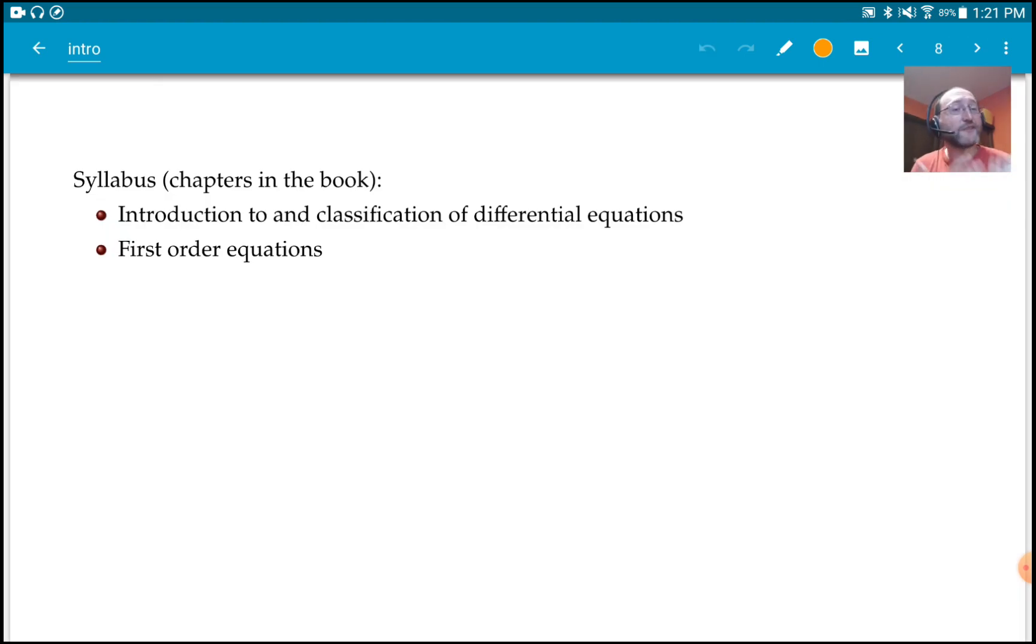Then we're going to look at first order equations, or equations where just the first derivative appears. Those are going to be simpler. Then we look at the higher order ordinary differential equations. Equations with just one independent variable. Mostly we're looking at second order equations here and mostly linear constant coefficient equations in that chapter.